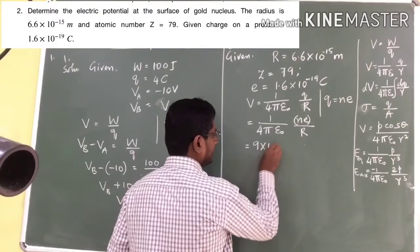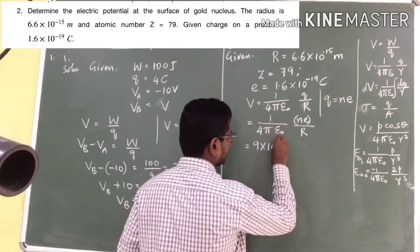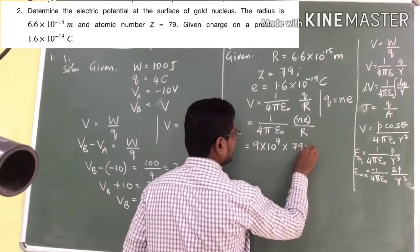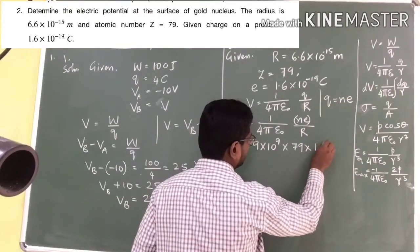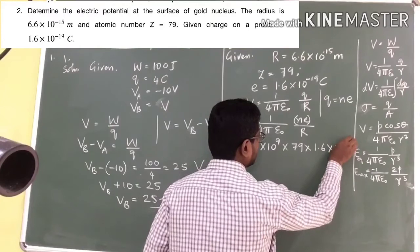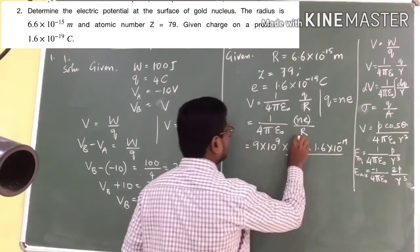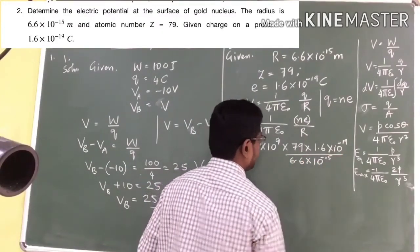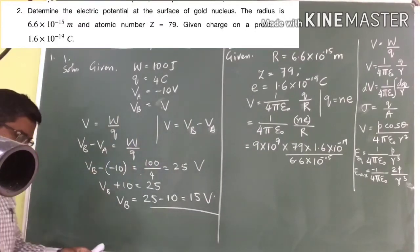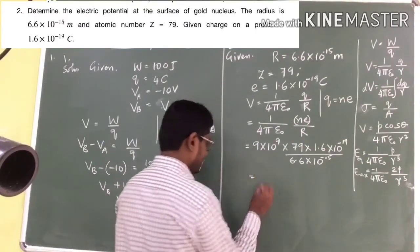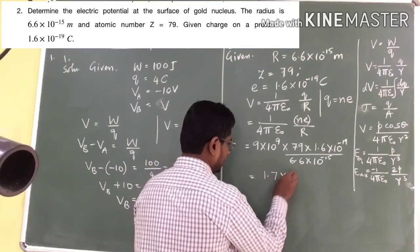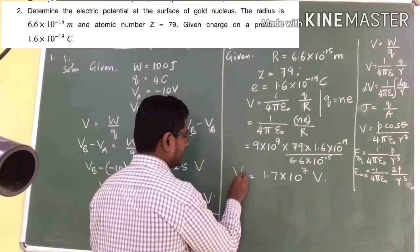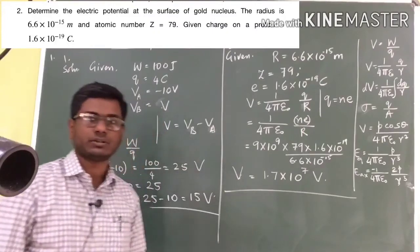It will be 9 into 10 power 9 for this 1 by 4 pi epsilon naught thing. Then after that, N. N is the number of protons. That is going to be 79 into charge of electron or proton. It will be 1.6 times 10 power minus 19 coulombs. And whole thing is divided by R. And R is given as 6.6 times 10 power minus 15 meter. Now, you can do the simplification. I will directly write the answer. The answer you should get is 1.7 times 10 power 7 volt. That will be my voltage or the potential at the surface of gold nucleus.